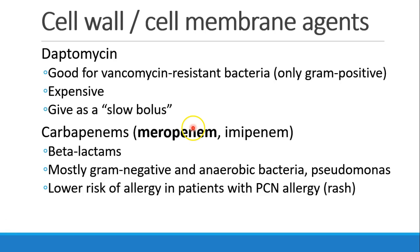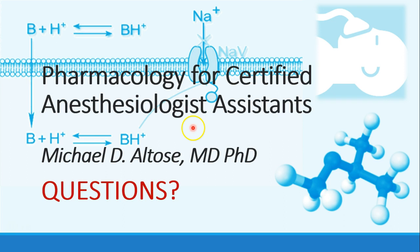Daptomycin is good for vancomycin-resistant bacteria, mostly effective against gram-positive organisms. It's expensive and usually given as a slow bolus. We also have carbapenems, like meropenem or imipenem — they are beta-lactams, but they don't seem to cause allergy in patients with penicillin allergy, so they are considered safe in certain penicillin-allergic patients. They are effective against gram-negative and anaerobic bacteria, as well as pseudomonas. That's it for our discussion of the cell wall drugs. We'll continue with the rest of the antibiotics in the next recording.